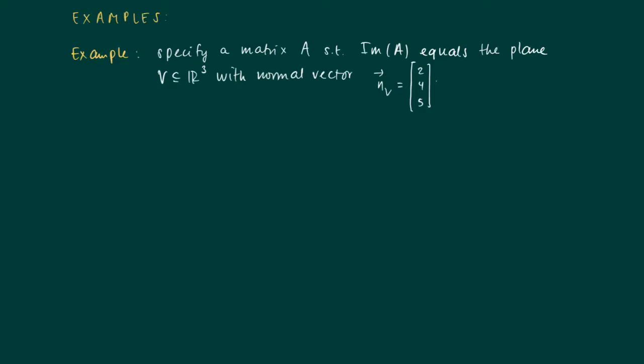An example. Specify a matrix A such that the image of A equals the plane V in R³ with a normal vector 2, 4, 5.